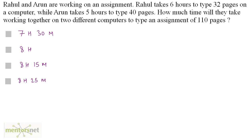Rahul and Arun are working on an assignment. Rahul takes 6 hours to type 32 pages on a computer while Arun takes 5 hours to type 40 pages. How much time will they take working together on two different computers to type an assignment of 110 pages?